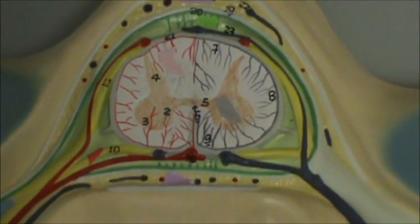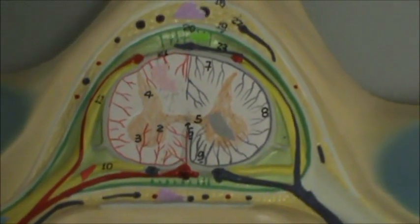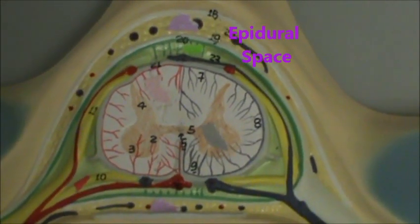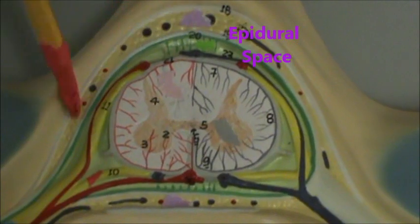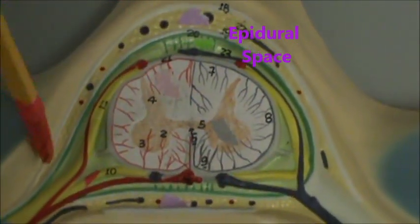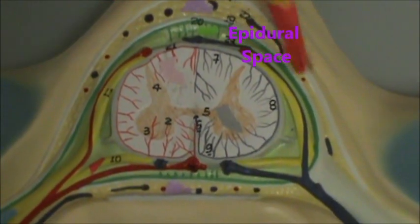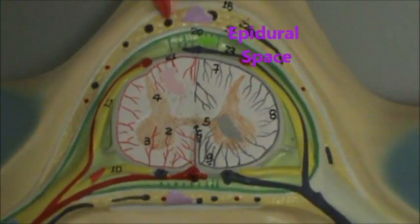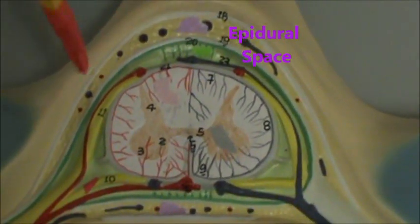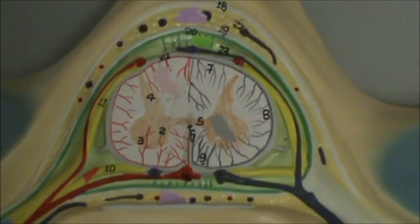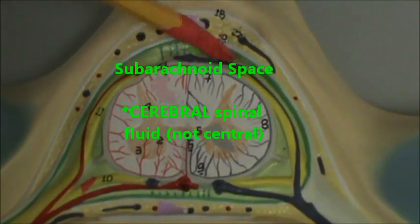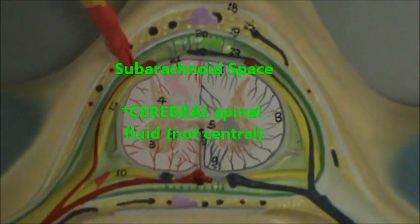And then our spaces — you have the epidural space there in lavender, and it's filled with adipose tissue, so it's pretty easy to identify. And in green we have the subarachnoid space, which houses the cerebrospinal fluid.